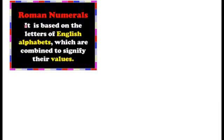The third rule says: if a smaller numeral precedes a large numeral, the numbers are subtracted. 'Precedes' means the smaller numeral is coming before the larger value, so we subtract the smaller one from the larger numeral. The next rule says a symbol is not repeated more than three times, but the symbols V, L, and D are never repeated or subtracted.